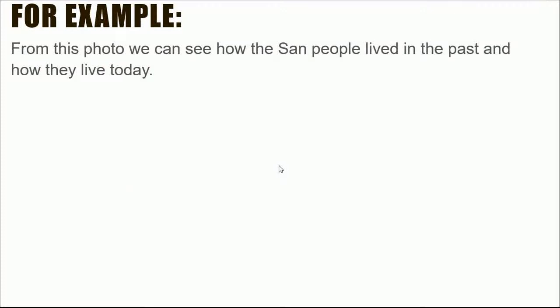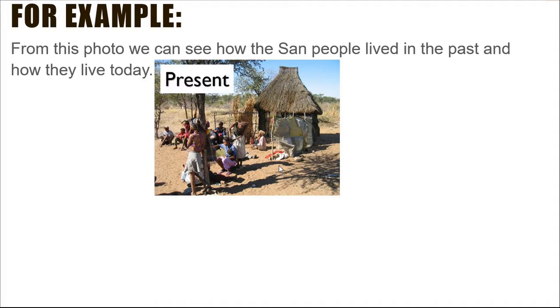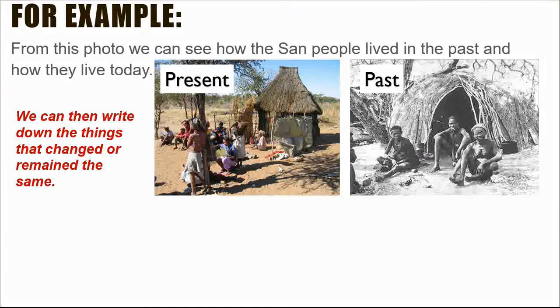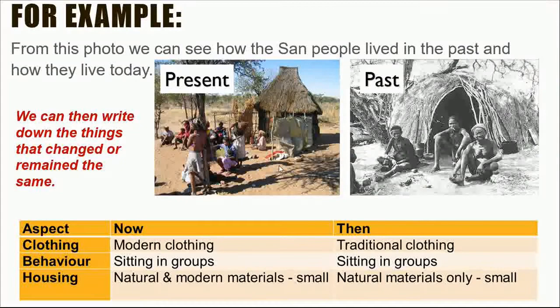From this photo, we can see how the San people lived in the past and how they live today. This picture shows the San people living in the present, while this picture represents the past. We can then write down the things that changed or remained the same. In the present, the clothing is more modern, the people are sitting in groups, and the housing uses natural and modern materials. In the past, they wore traditional clothing, also sat in groups, and only used natural materials.